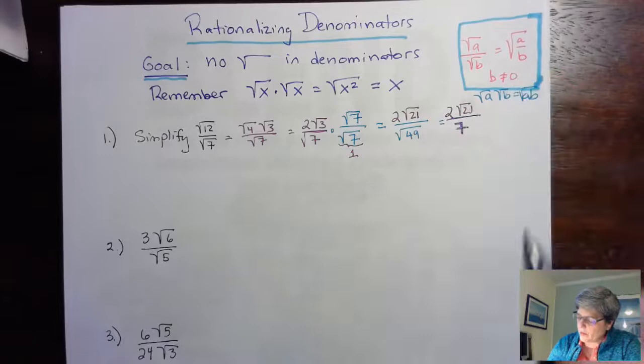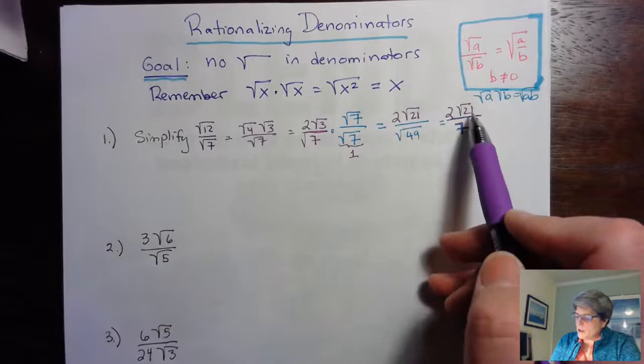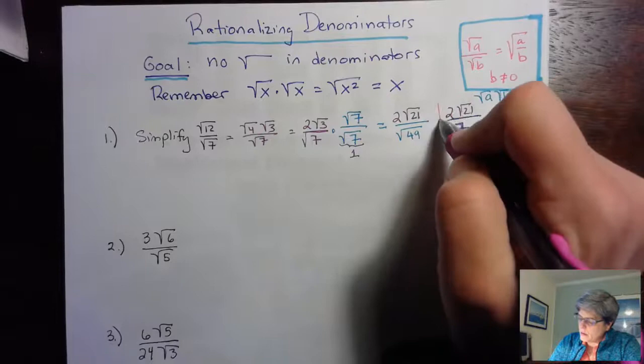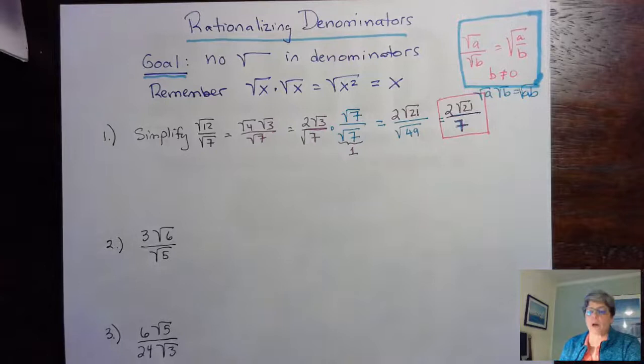Remember the rule that the square root of A times the square root of B equals the square root of AB — that's the rule we use here. So we have 2 times the square root of 21, all over 7. Be careful here: there's a temptation to divide 21 by 7, but we don't, because 21 is under a square root sign and 7 isn't, so they can't be divided. That's our final answer.